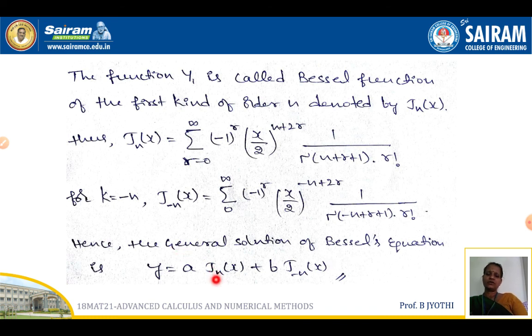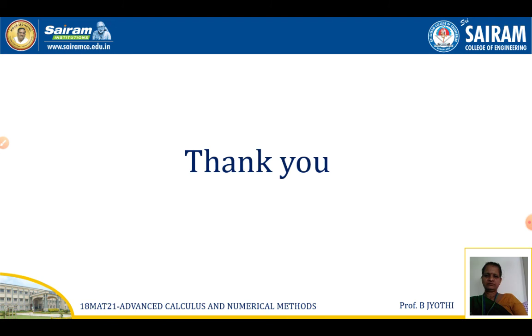Hence the general solution of Bessel's equation is y = a·Jn(x) + b·J_{−n}(x). Thank you.